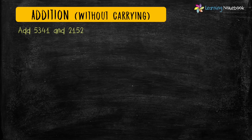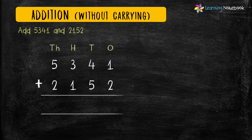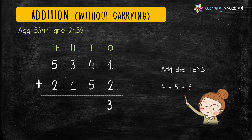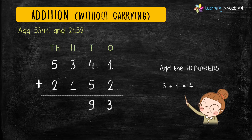The example is to add 5341 and 2152. To add these two four digit numbers, first let's write them in columns. Now let's start adding them from the ones place: 1 plus 2 equals 3. Now add the digits at tens place: 4 plus 5 equals 9.